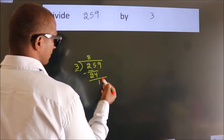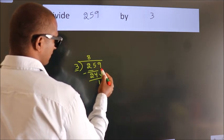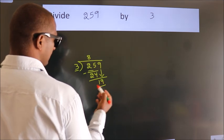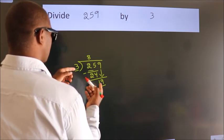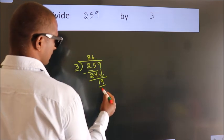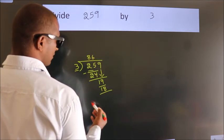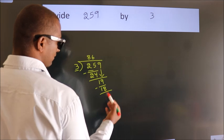After this, bring down the beside number. So, 9 down. So, 19. A number close to 19 in the 3 table is 3 times 6, 18. Now we subtract. We get 1.